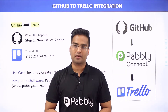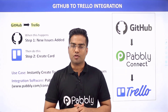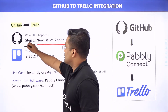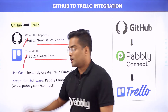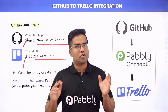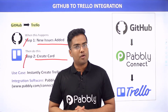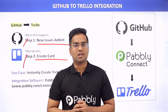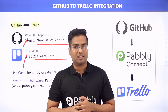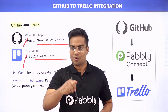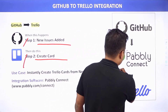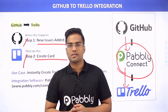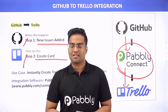Hello everyone. Welcome to Pabbly Connect. In this video, we will learn how to integrate GitHub and Trello. Our use case is pretty simple: when a new issue is added in GitHub, it will automatically create a card in Trello. GitHub is an awesome code hosting platform and Trello is an awesome list building application. We are going to send the data from GitHub to Trello. There is no integration between GitHub and Trello, so we need to bring a third app to connect them both. We will be using Pabbly Connect, and the best part is there is no need for coding skills or programming knowledge.